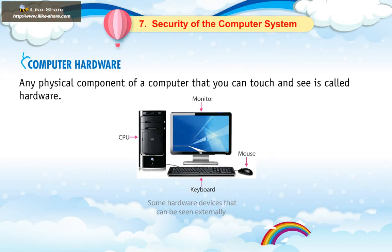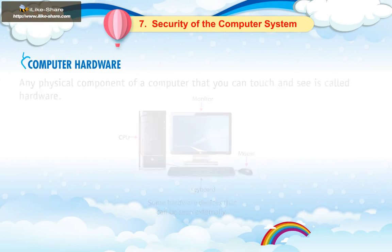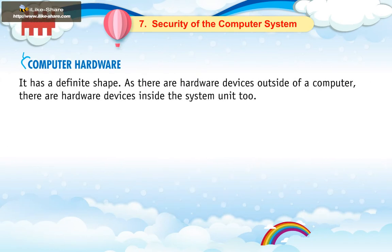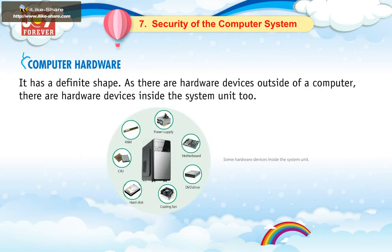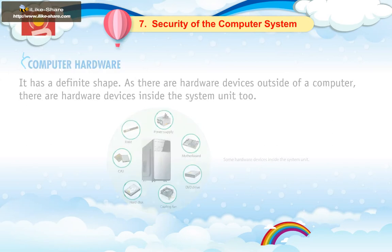Computer Hardware: Any physical component of a computer that you can touch and see is called hardware. It has a definite shape. As there are hardware devices outside of a computer, there are hardware devices inside the system unit too.